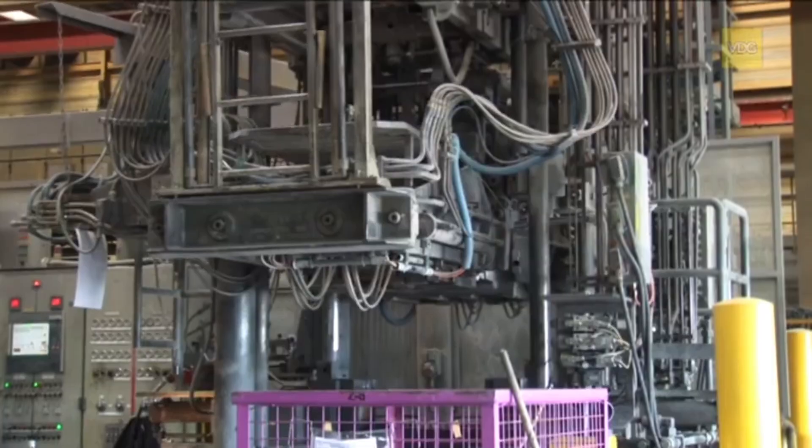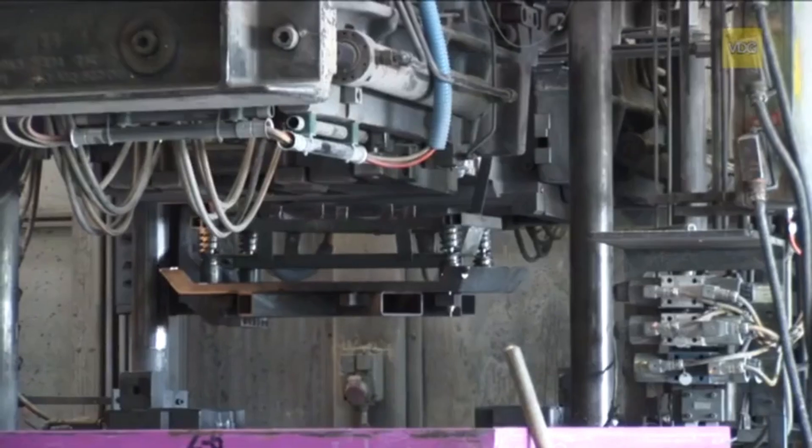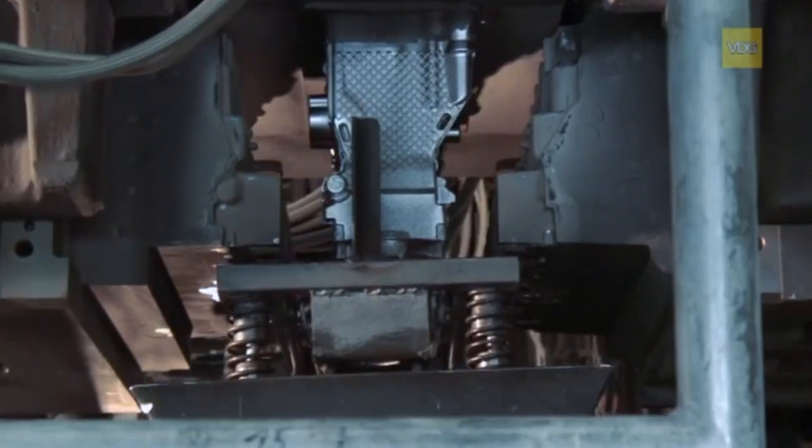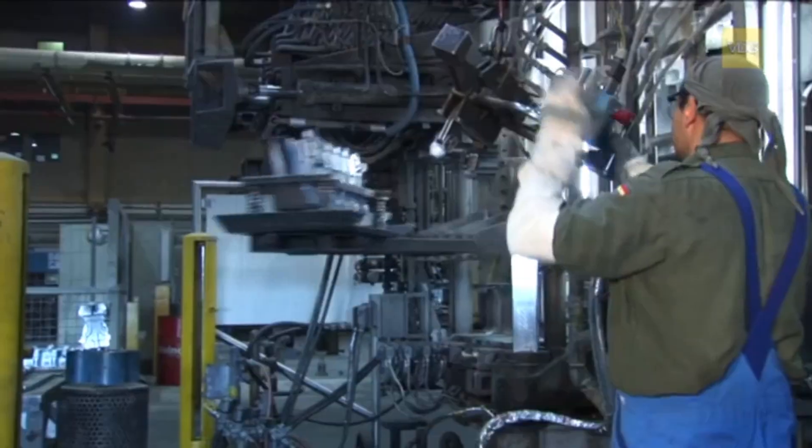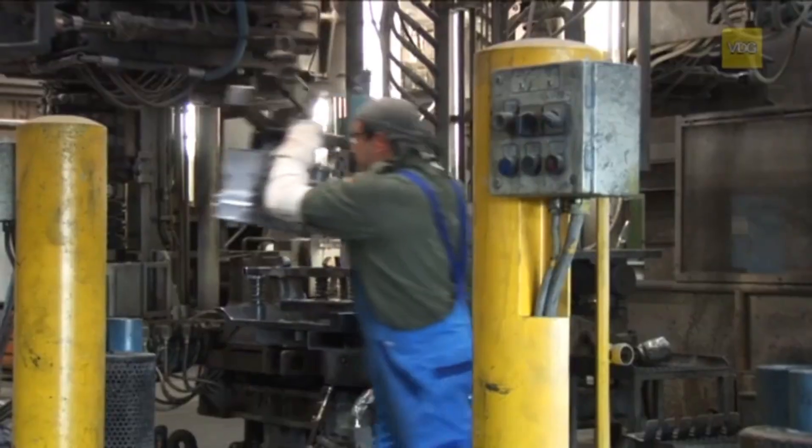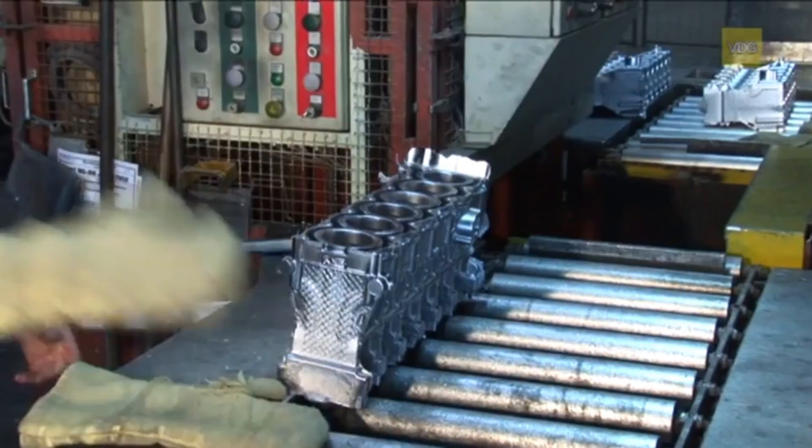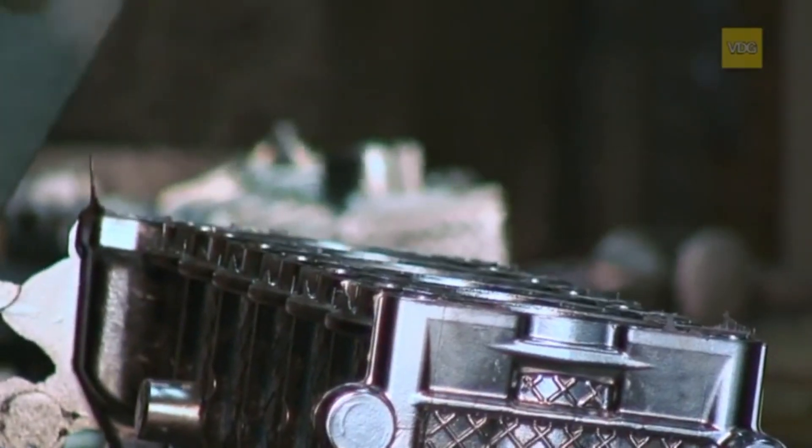The mold opens automatically. When the side sections are retracted, ejectors push the casting onto the extraction device. The circulating material required for this process is approximately 5%. The foundry worker places the casting on the inspection station and roughly removes excess material so that further handling can proceed automatically.